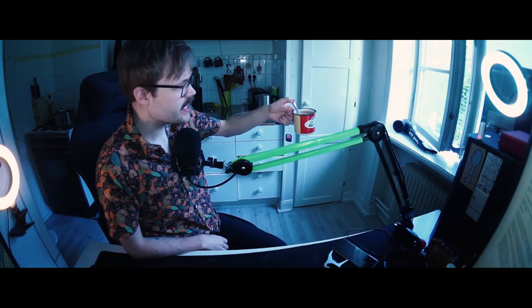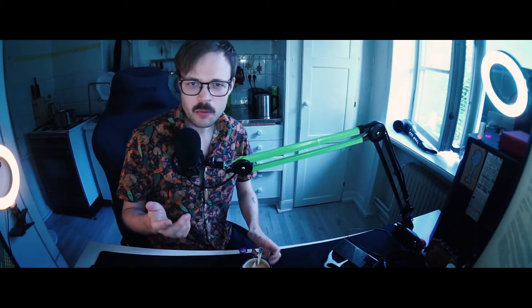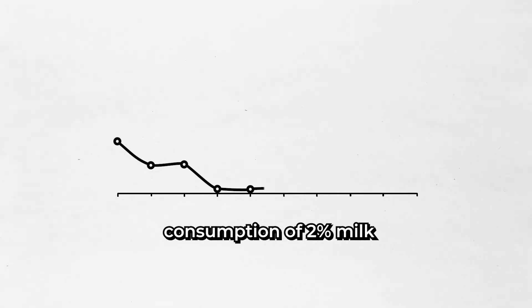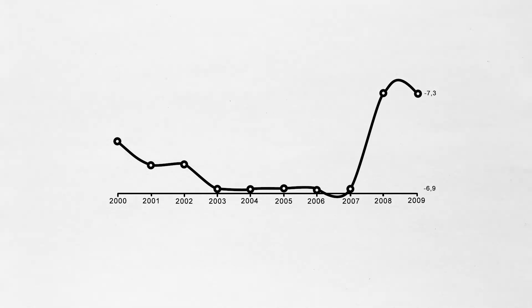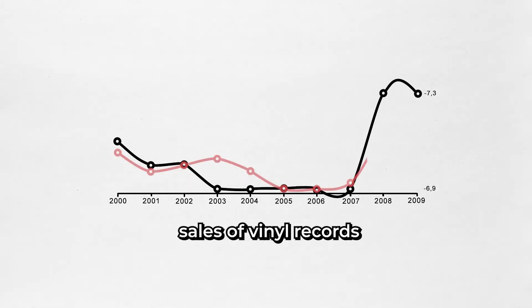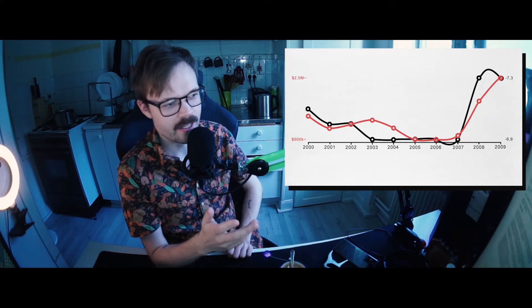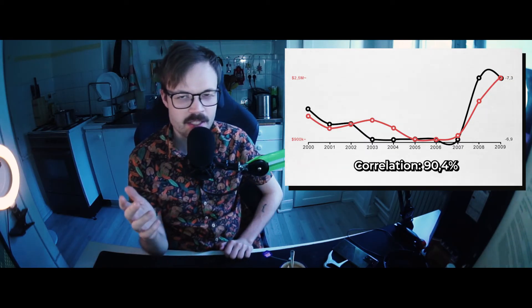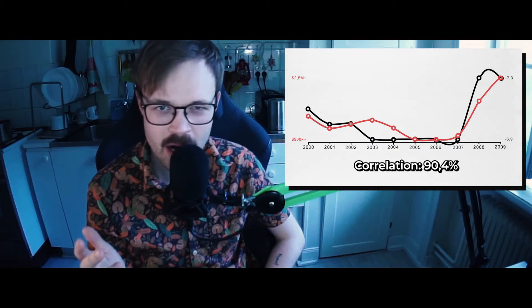Now it's bright outside again. How are they getting away with this? So here's the consumption of 2% milk between the years 2000 and 2009, counted in gallons per person. And this red line is the sales of vinyl records. What we're looking at here is a correlation of 90.4%. But why?